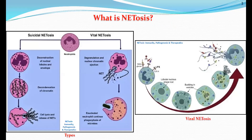What is NETosis? As per the name, you can understand that it is a unique form of cell death characterized by the release of decondensed chromatin and granular contents into the extracellular space. When talking about COVID, we refer to two types of NETosis. In vital NETosis, only the nuclear element gets decondensed, but most cytosolic elements remain unaffected — the enucleated neutrophil continues to phagocytose microbes. In suicidal NETosis, both nuclear and cytosolic elements get decondensed and released via NET formation. In this picture, you can see a beta-glucan receptor, LPS, and the TLR-4 receptor — the pattern recognition receptor — from which the NET can be generated.